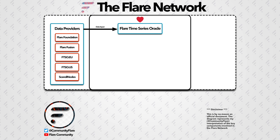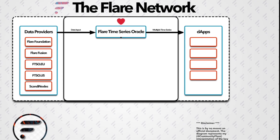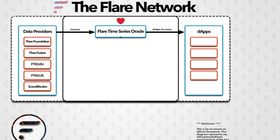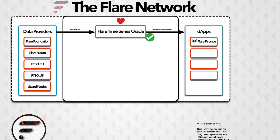But where will the data be used? Well, one of the main uses of the data will be within decentralized applications running on the Flare Network, or DApps for short. Flare Finance is just one example of a company which is building decentralized applications on the Flare Network. As a beta tester, I can confirm that you have a lot to look forward to in the coming months. These applications rely on price data to function, and can consider it accurate as it has been processed by the Flare Time Series Oracle.